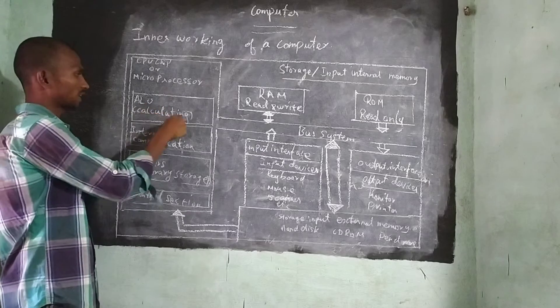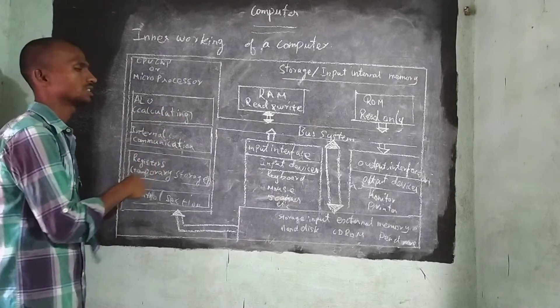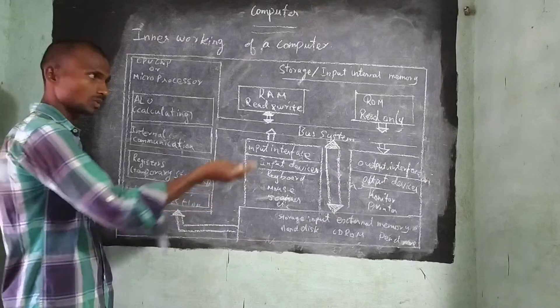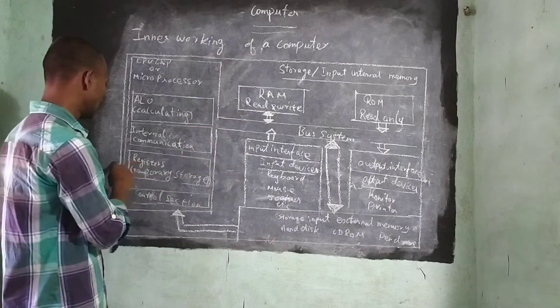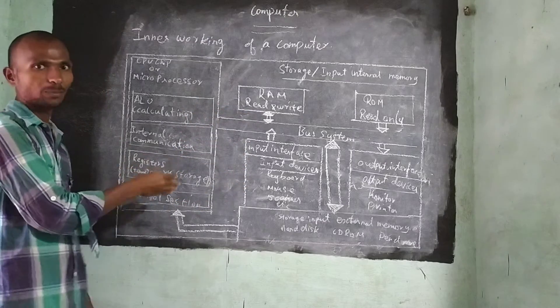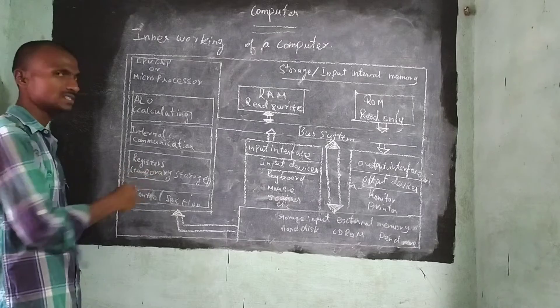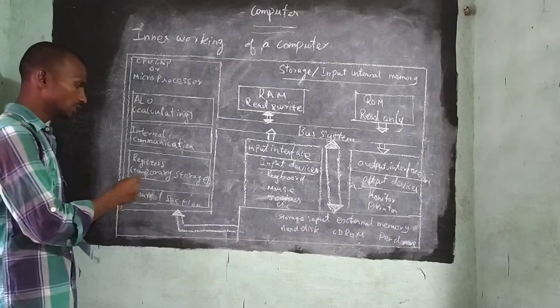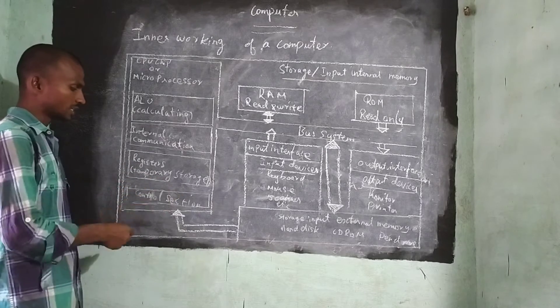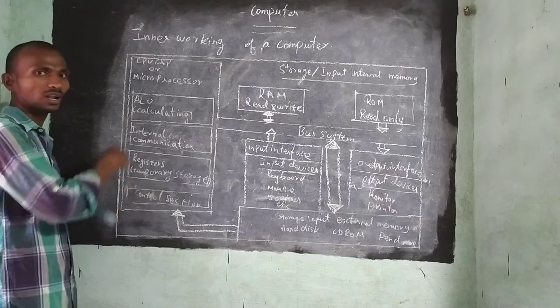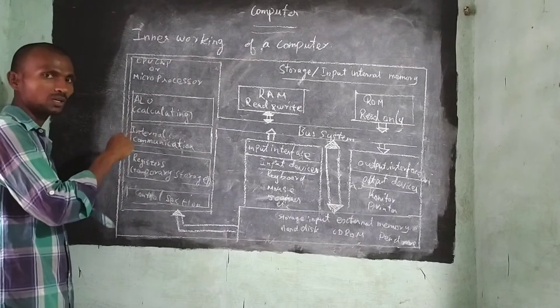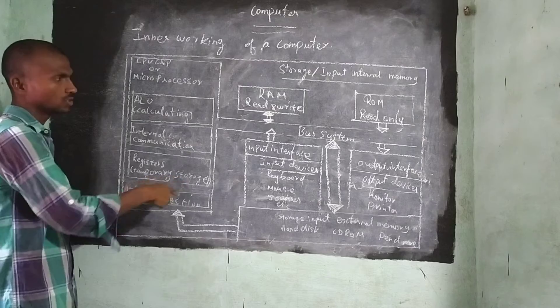It is the process of calculating. Next, Internal Communication. It will communicate with each and every parts of the computer. Next, Register. It is the temporary storage. Register is the temporary storage. Next, Control Section. It only is controlled over all the CPU. Or over all the computer is controlled by the control section only.